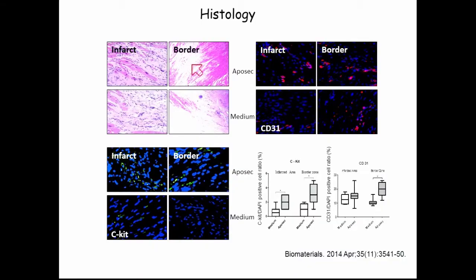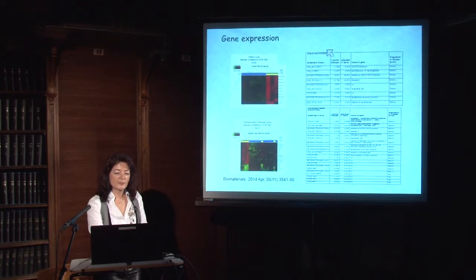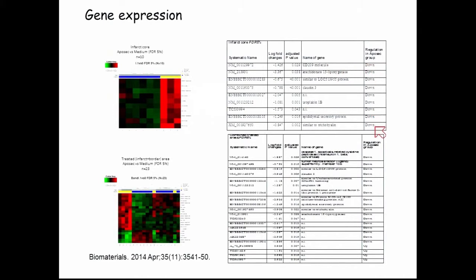Histology showed a similar infarct area in EPISEC and medium-treated animals, but the border zone was filled with more myocytes in the EPISEC group, confirmed by a higher number of CD31-positive cells more extensively distributed in the border zones. We also found more CKIT-positive regenerative cells in EPISEC-treated animals in the border zones of infarction compared with medium-treated animals. Gene expression profiling showed a surprising predominance of downregulated genes in EPISEC-treated animals; we had expected upregulation of regenerative genes, but saw mainly downregulation in the infarct zone.